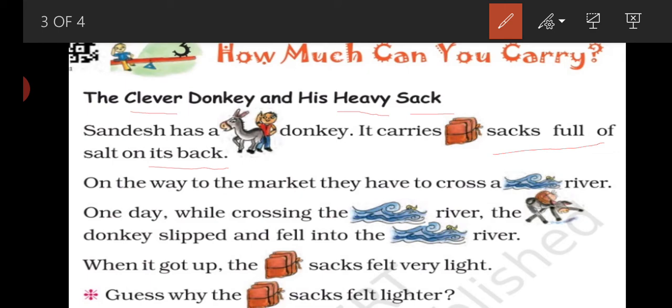One day while crossing the river, एक दिन जब वो river cross कर रहा था, the donkey slipped. Donkey क्या हो गया? फिसल गया? Slip means फिसल गया. And fell into the river. और river के अंदर नदी के अंदर गिर गया.